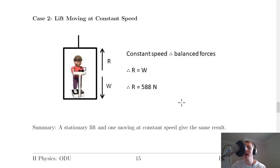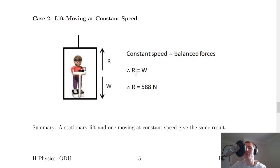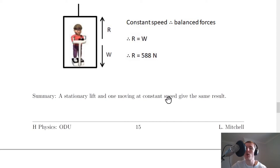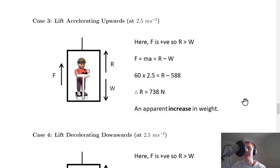Case 2: the lift is moving at a constant speed. Newton's first law tells us that an object moves at constant speed only when acted on by balanced forces, so again R equals the weight: R = 588 newtons. A stationary lift and one moving at constant speed give the same result.